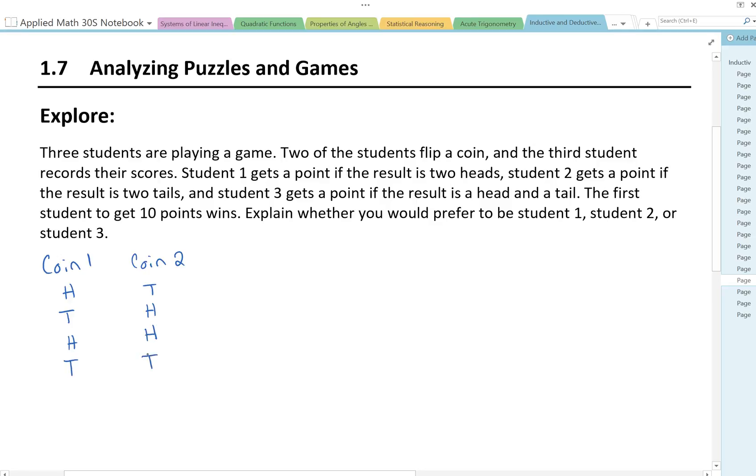So those are all the possible outcomes. Looking at the points, if you were student 1, you get a point if the result is two heads.